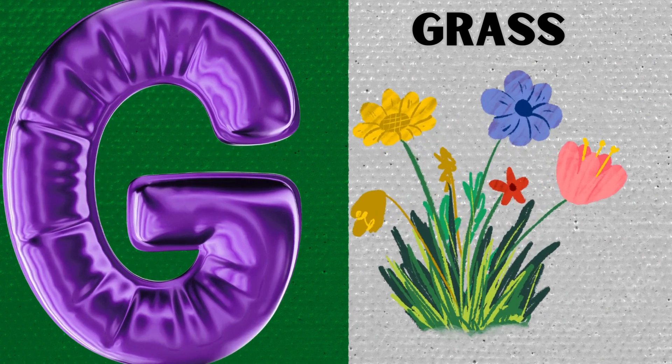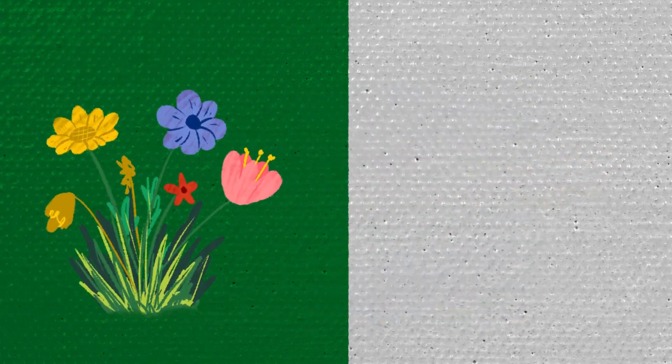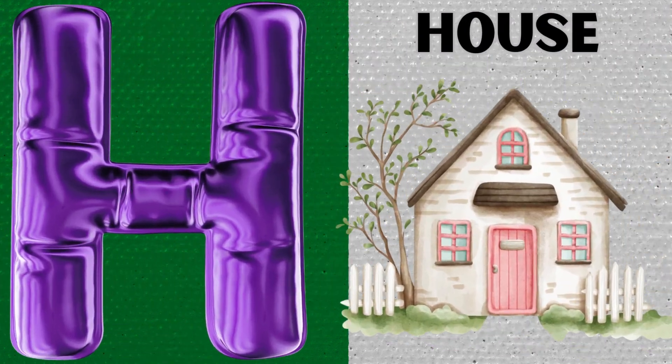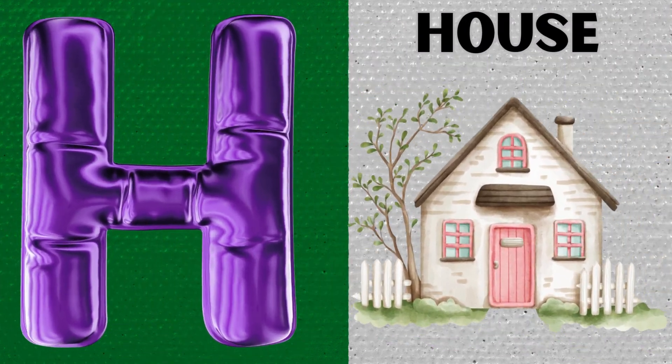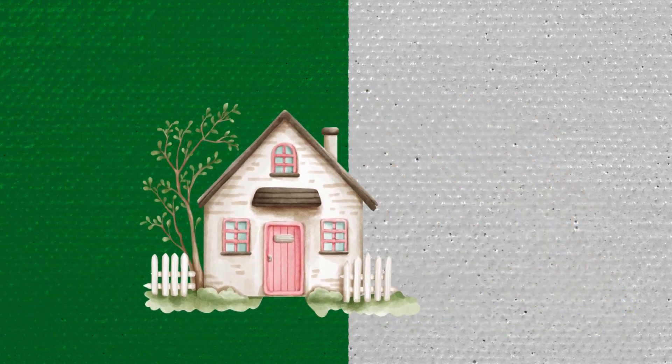G is for Grass. G, G, Grass. H is for House. H, H, House.